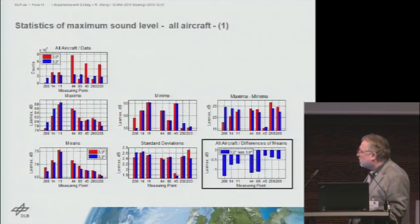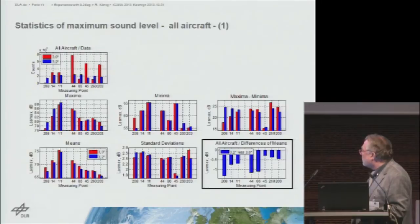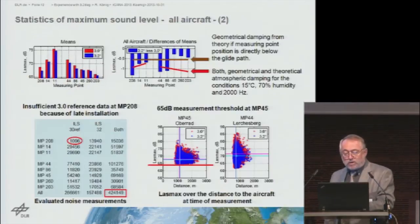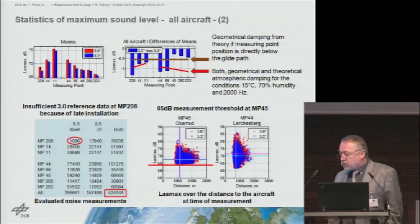When looking at the charts, you can see the blue bars are lower than the red bars. The difference is depicted separately. When looking at the respective measurement points, there is a decline of even 1.4 dB at some, more than 1 dB at others, and some lower differences as well. Those are the means and the difference of the means.